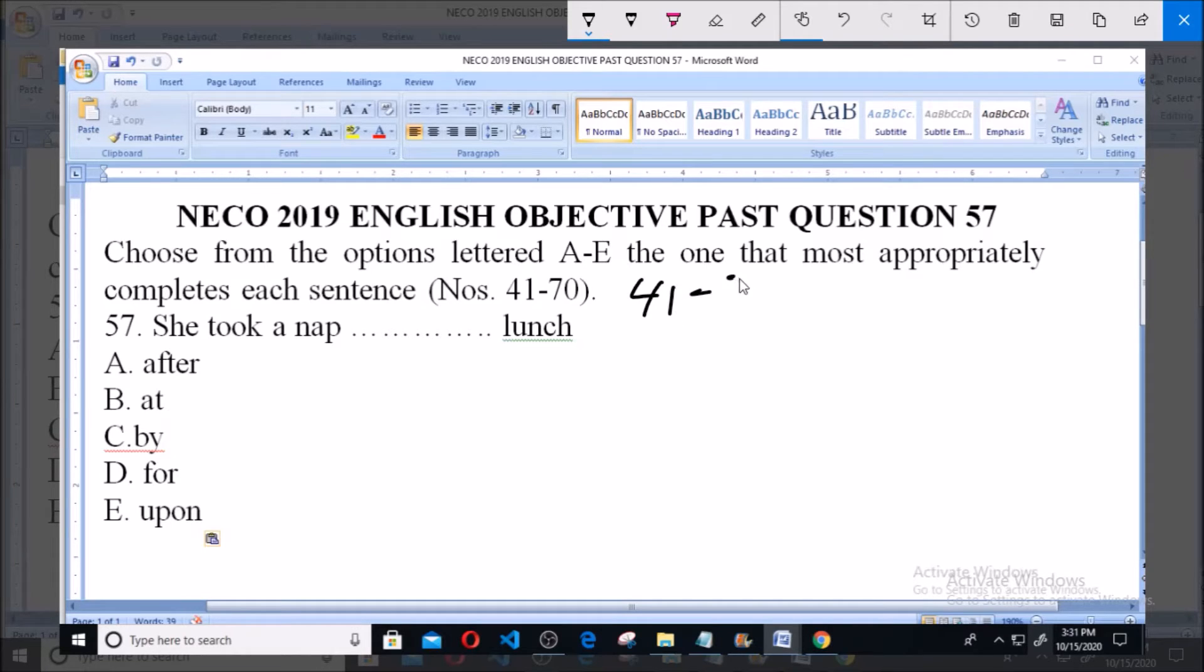answer questions 41 to 70 of this English paper. In question 57, the statement says: 'She took a nap ___ lunch.' 'Nap' here means short sleep. The options are: A. after, B. at, C. by, D. for, E. upon.